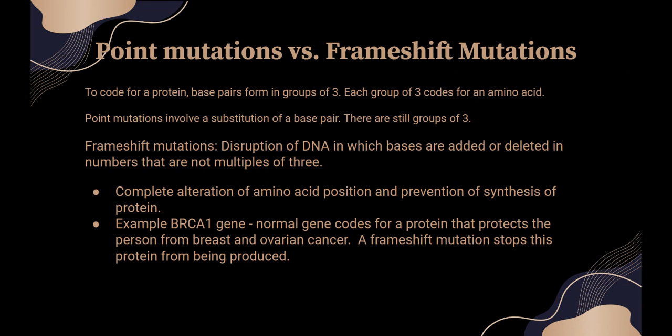That's a little bit different from a frameshift mutation. Base pairs form in groups of three; each group of three forms a triplet, and when the strand separates, RNA picks it up as a codon and tells the body which amino acid to make in which sequence. Substituting a single base pair still gives you groups of three, so a point mutation might be a little less serious unless it's a nonsense mutation. Frameshift mutations occur when you add or delete base pairs — you end up with groups of two or four instead of three, causing a complete alteration. You can't form amino acids from that.